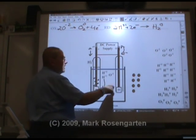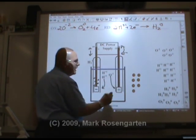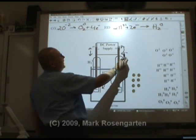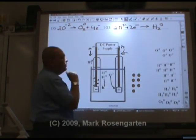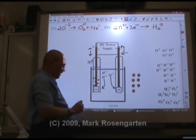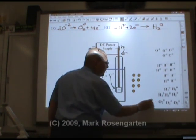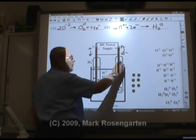Then on this end, the negative oxygen gets attracted to the positive electrode, where it has its electrons forcibly removed and sucked back up into the battery. The oxygen gas forms and then bubbles up.